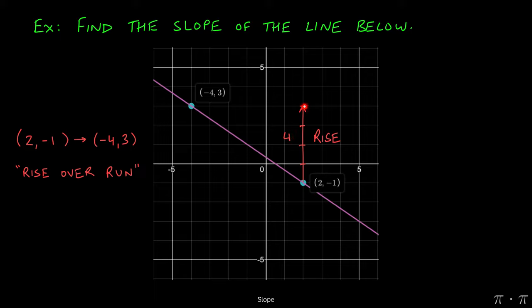Now from here, we would need to move 6 units to the left. Because we're moving to the left, that's always given as a negative quantity. So the run would be negative 6.